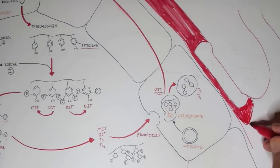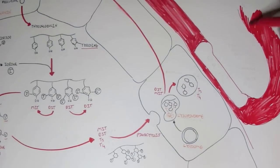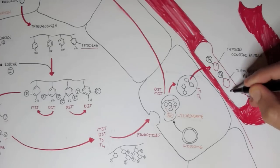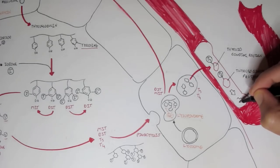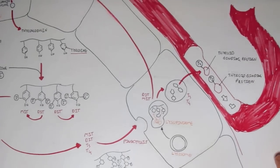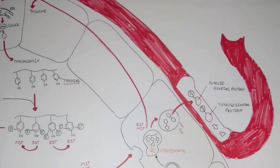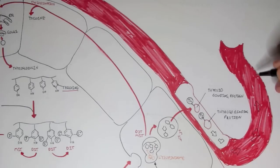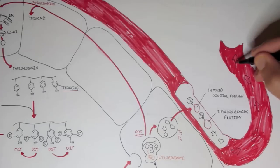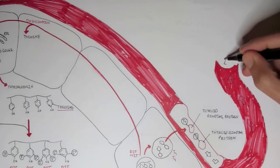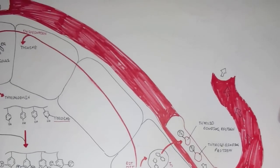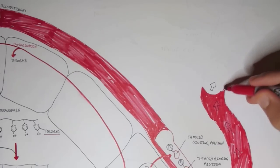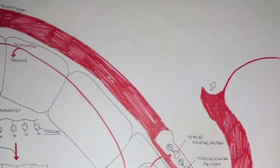Back in the blood vessels, there are special proteins known as thyroid binding proteins. Because T3 and T4 are lipid hormones, they cannot travel through the bloodstream by themselves, so they bind to these thyroid binding proteins, which allow them to be transported around the body to various cells and tissues to initiate metabolic effects. It should be noted that more T4 is secreted by the follicular cells than T3; however, T3 is 10 times more active than T4.